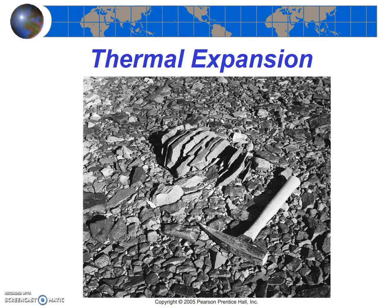The fifth and last type of mechanical weathering is thermal expansion — the least important of the five processes. Thermal expansion occurs when a rock is exposed to repeated alternation of very high and low temperatures. When the rock is heated, it expands slightly, and when cooled, it contracts slightly. As this is repeated hundreds or thousands of times, a rock may develop weak regions and break. In this photo, the rock hammer was used for scale — this rock likely broke apart due to thermal expansion.